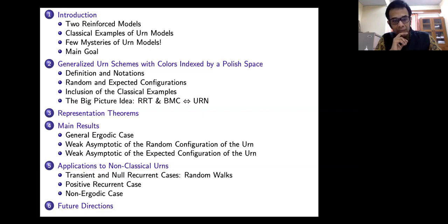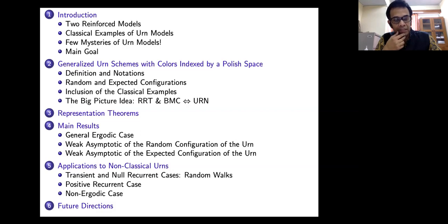Then we will talk about the connection between the two different processes — the random recursive tree and branching Markov chain — and show that leads to Pólya-type ARN models, which we call the representation theorem. The rest of the talk would essentially use this theorem to derive classical results as well as some new results. Finally, I'll end with recent work with Devlina and Savanti which covers something we always expected, but turned out to be much more difficult than we initially thought.